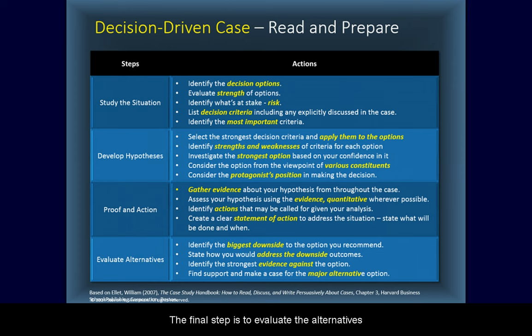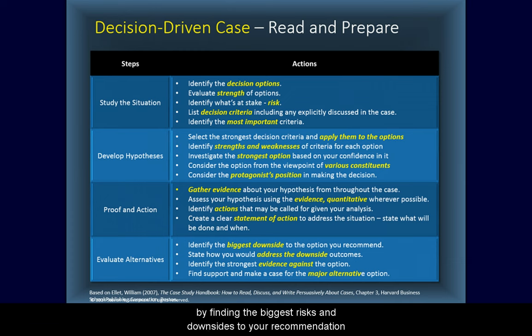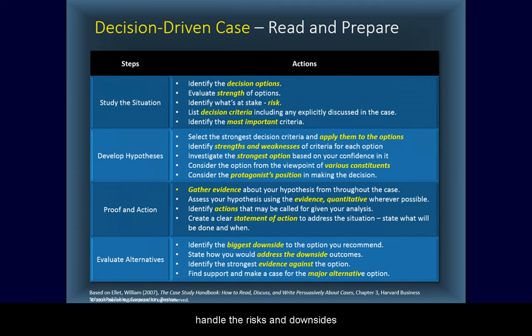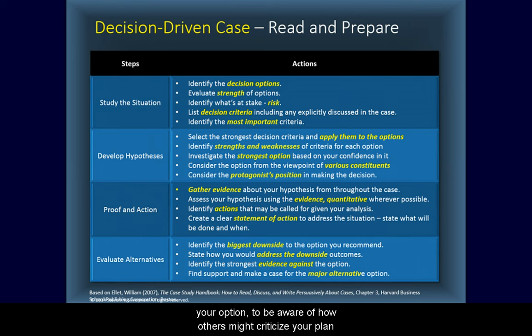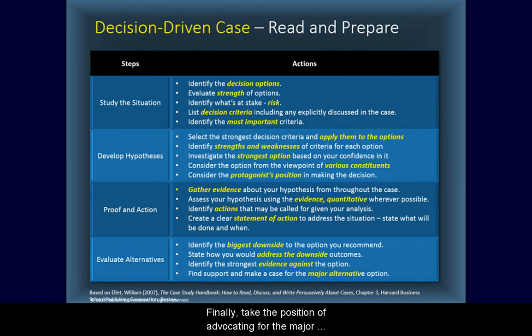The final step is to evaluate the alternatives. You are going to challenge your chosen option by finding the biggest risks and downsides to your recommendation. Then turn around and describe how you would handle those risks and downsides. Next, identify the strongest evidence against your option to be aware of how others might criticize your plan. Finally, take the position of advocating for the major alternative hypothesis and find support for it.